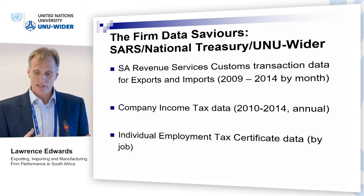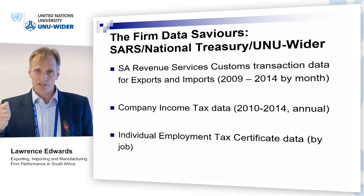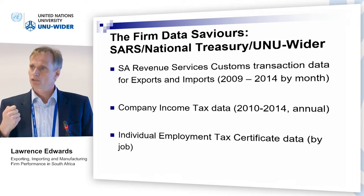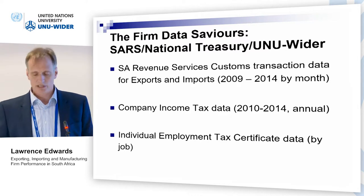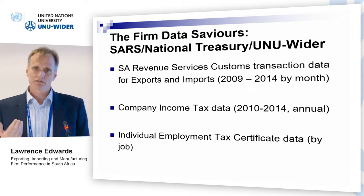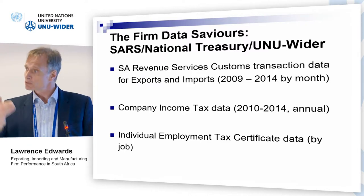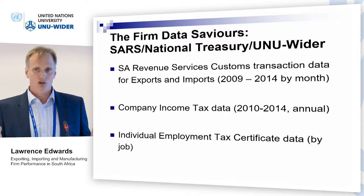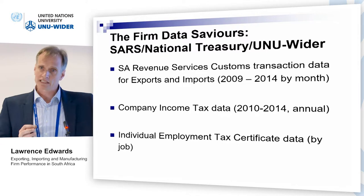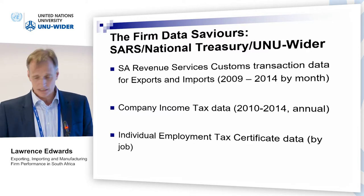Three sets of data were made available. First, customs transaction data — individual export and import data collected every time a good is exported or imported. Second, the company income tax data: all firms registered for income tax submit annual returns providing information about production, profits, cost of sales, etc. Third, employment tax certificate data, which varies by job — individuals appear multiple times if they have multiple jobs for different companies. We were able to combine all three databases — a very messy process — but effectively we combined a detailed trade transaction database with an income tax database and a detailed employment database, creating a very rich panel of data that has led to a lot of research.